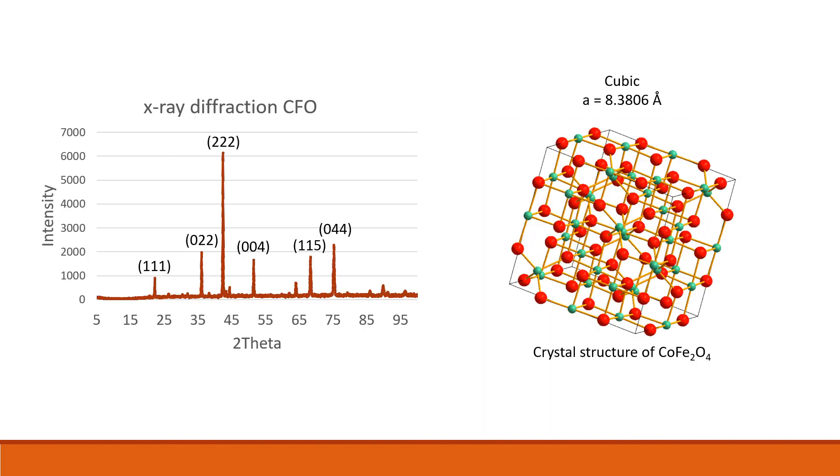So here we have our data for the crystal structure CFO, which can be shown here with its cubic structure. On the graph, we have intensity of the diffracted x-ray beam on the y-axis and then the 2θ value on the x-axis. We can see several noticeable peaks of intensity at specific 2θ values, and these values represent certain planes, which I have written in here.